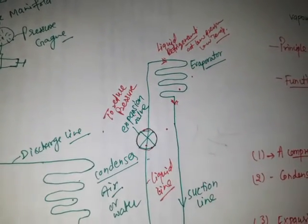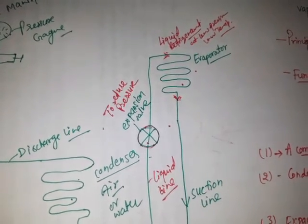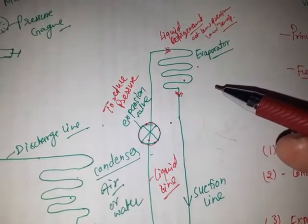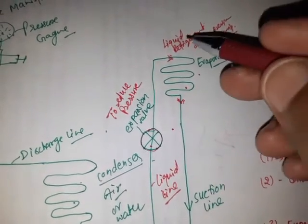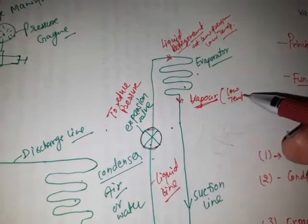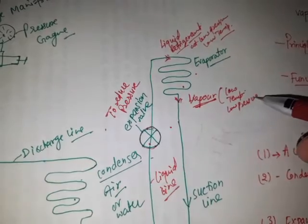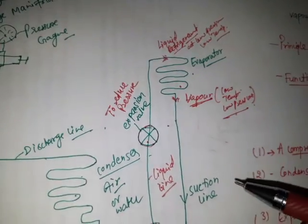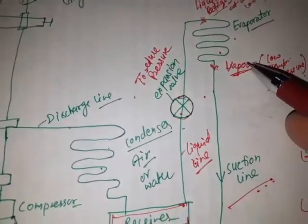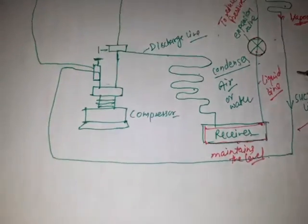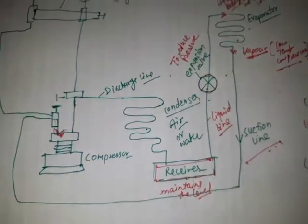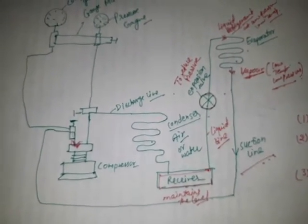At the outlet of the evaporator the temperature is increased as the liquid absorbs heat. At the outlet, low temperature and low pressure vapors are present, because the liquid refrigerant has converted into vapors. These low pressure and low temperature vapors are carried by the suction line, which carries them from the evaporator and supplies them to the inlet of the compressor.